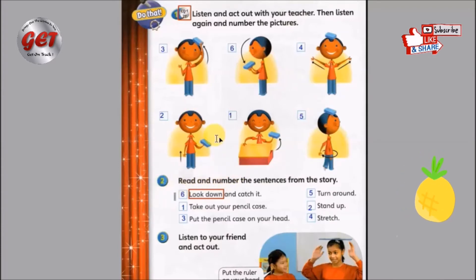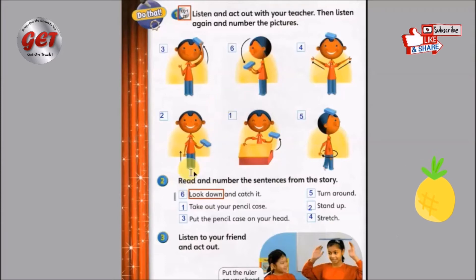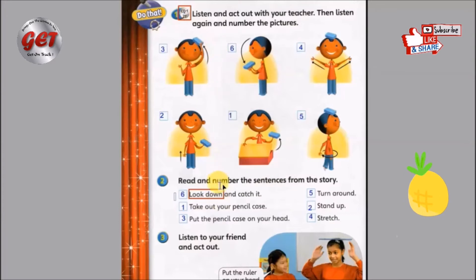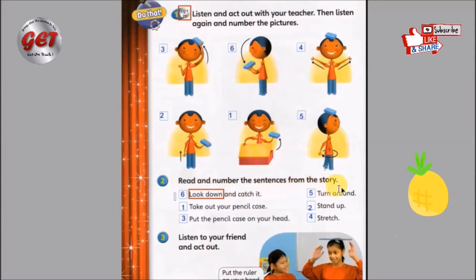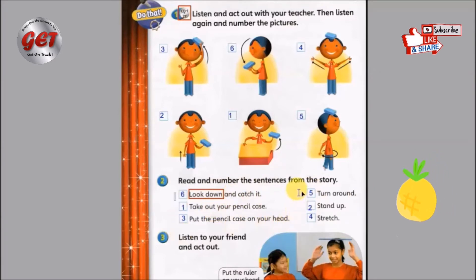Let us have a look at part 2. Why we have to look at part 2? It is because part 1 and part 2 are closely related. 为什么我们要看这个第二个部分呢？因为第一个部分跟第二个部分是息息相关的。Part 2 — Read and number the sentences from the story. 第二个部分呢你就要大声读出来，然后把这些号码标示出来。这号码就是动作的次序 — the order of our action.